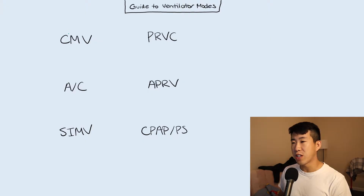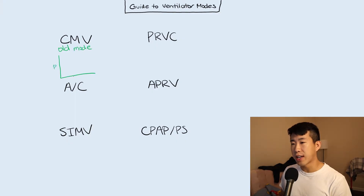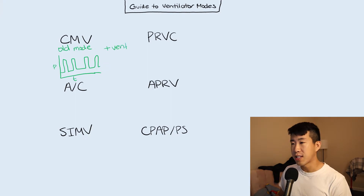The first one is CMV, or continuous mandatory ventilation. This is an old one that you're really not going to see that much anymore. In this mode, the ventilator is just going to be breathing for the patient. And if the patient wants to take a spontaneous breath, the machine will completely ignore them. So this is plus vent and then no patient support at all.